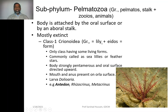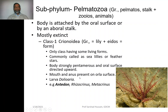Crinoidia is a Greek word meaning lily — 'euthyos' means form — because they have the form of a lily. They are commonly called sea lilies or feather stars. Body is strongly pentamerous and oral surface is directed upward. Mouth and anus are both present on the oral surface. The larva is doliolaria. Examples include Antedon, Rhizocrinus, and Metacrinus.